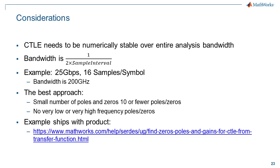Here are some considerations to keep in mind when creating a GPZ matrix. The GPZ matrix must be numerically stable over the entire analysis bandwidth. The bandwidth is 1 over 2 times the sample interval, where the sample interval is the symbol time divided by samples per symbol. This means the bandwidth can be very wide — for example, if the symbol time is 40 picoseconds and samples per symbol is 16, the bandwidth is 200 GHz. The best approach is to keep the number of poles and zeros to 10 or fewer. Very high frequency poles and very low frequency poles can cause instabilities and should be avoided.